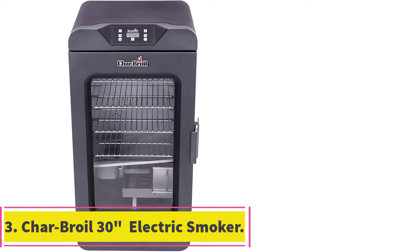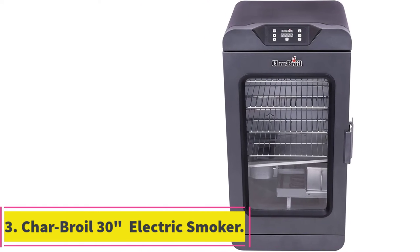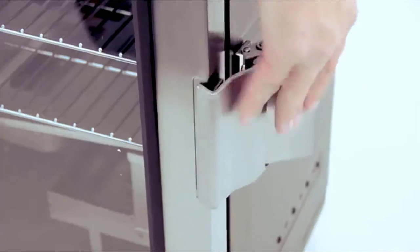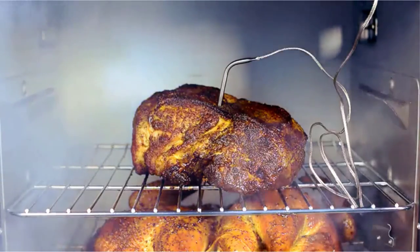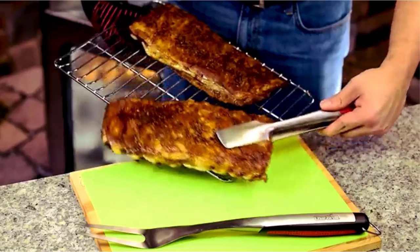At number 3, Charbroil 30-inch Deluxe Black Digital Electric Smoker. Last, but certainly not least in some ways, is the Charbroil 30-inch Deluxe Black Digital Electric Smoker, and this is the budget pick on our list of the 5 best commercial-grade smokers out there. This certainly looks the part of a more traditional smoker and a lot of people will be considering this unit.